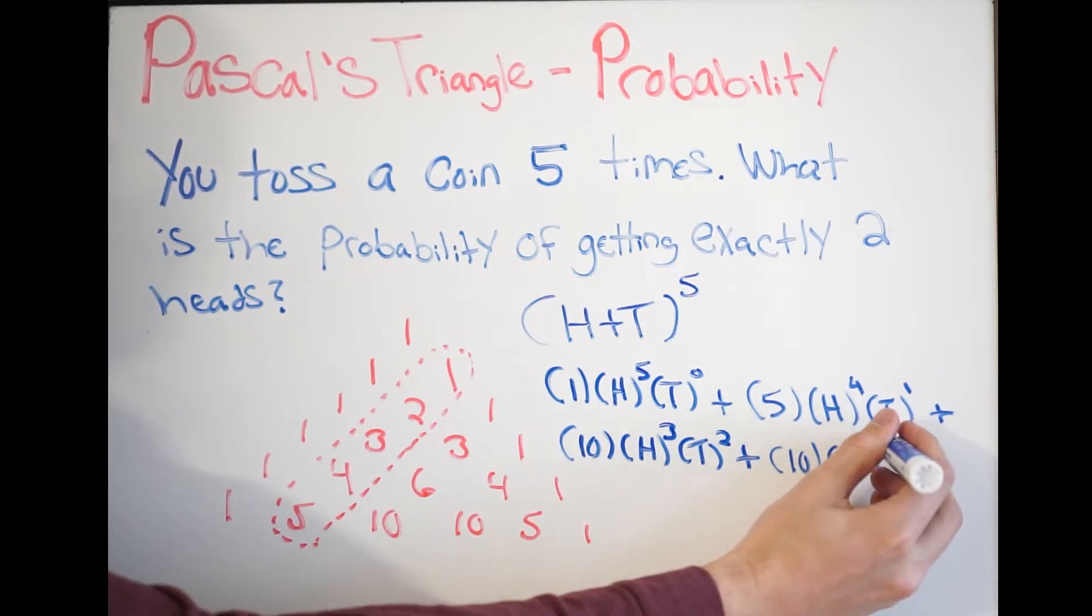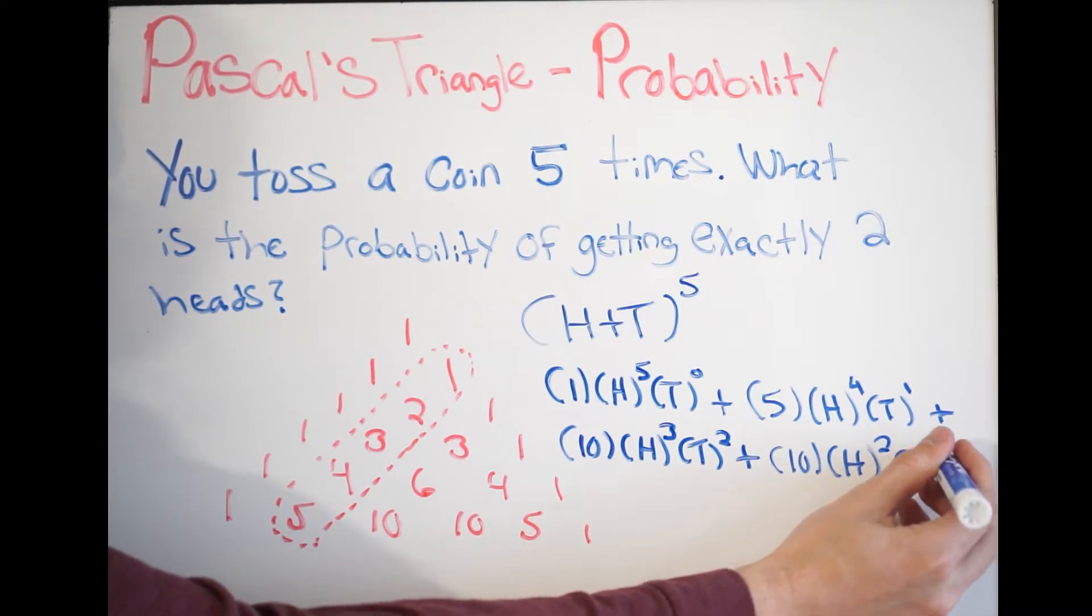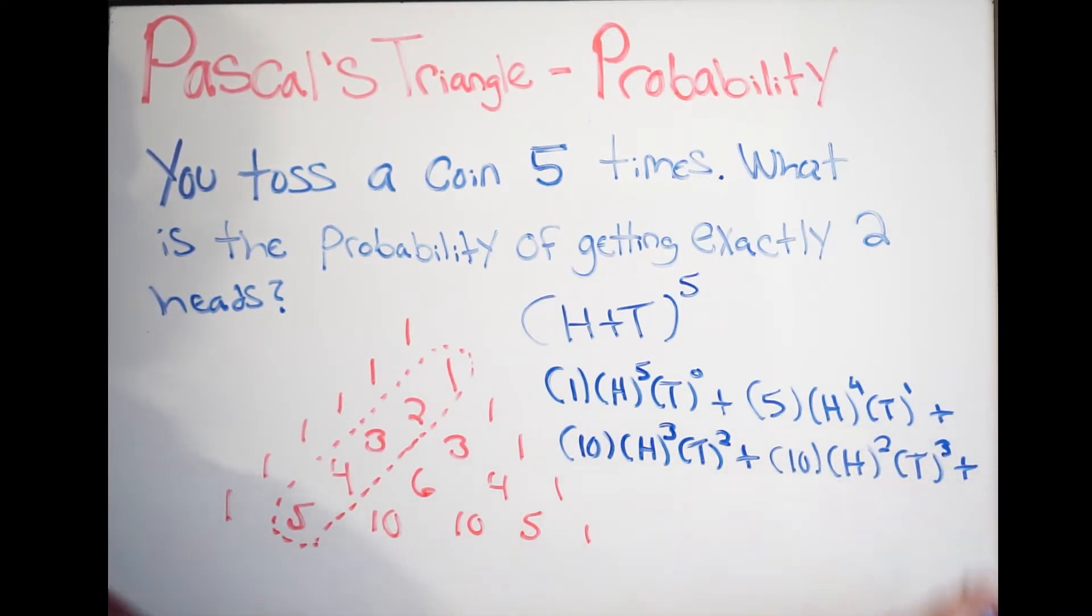Here, I get H to the second, T to the third. Plus, continuing on, my next coefficient is five, and then I get H to the first, T to the fourth.